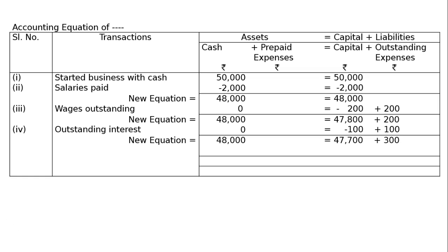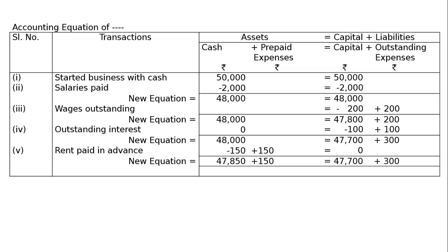Fifth transaction: rent paid in advance. It is an asset — we have not spent it, we have paid it in advance. It will be reduced from cash and added to prepaid expenses, both on the asset side. Minus from cash rupees 150, add to prepaid expenses rupees 150, that equals zero net change. The new equation will be: rupees 47,850 plus 150 equals rupees 47,700 plus 300. This is the final answer.